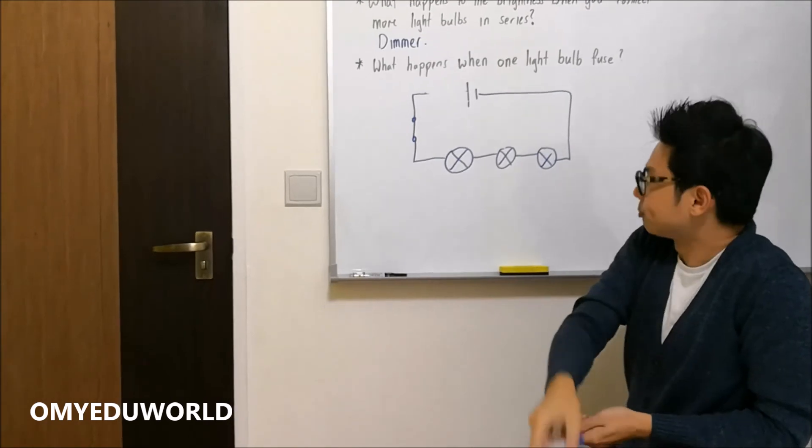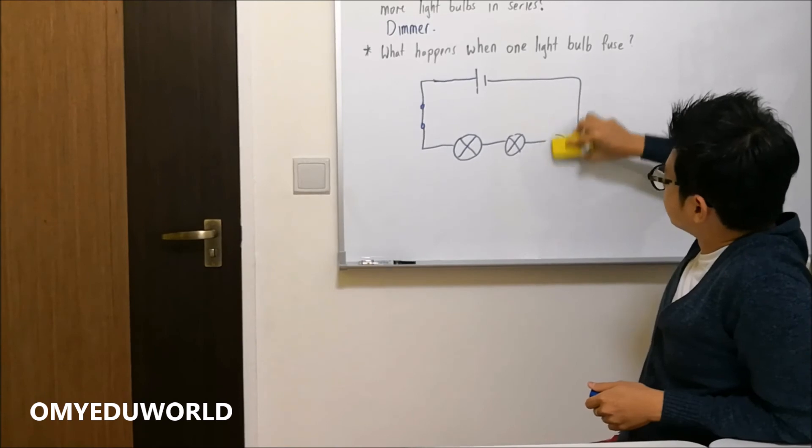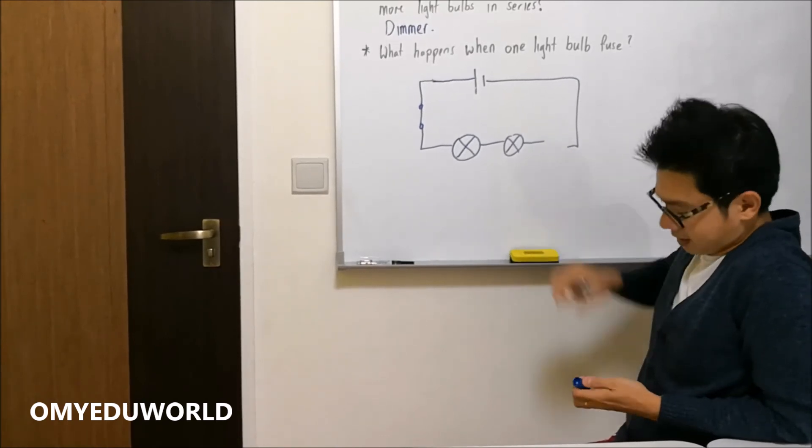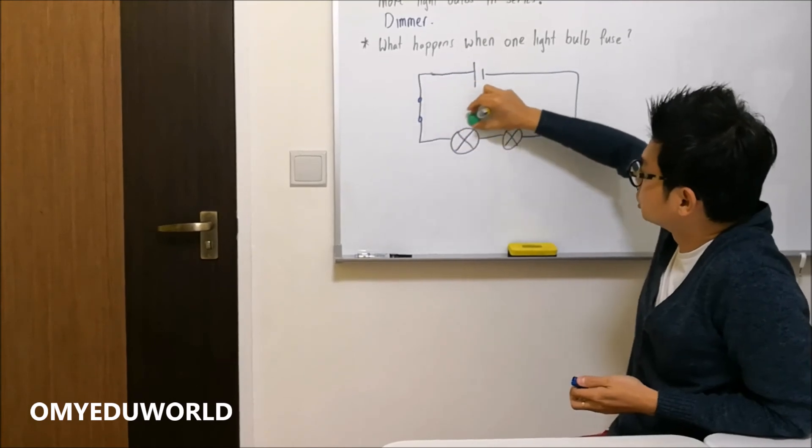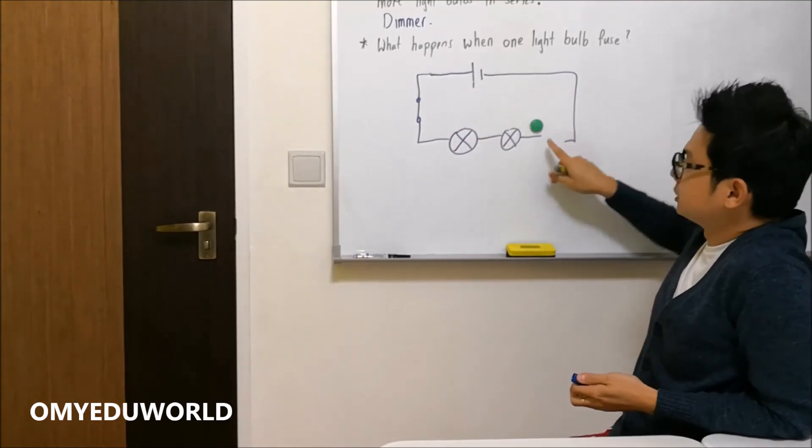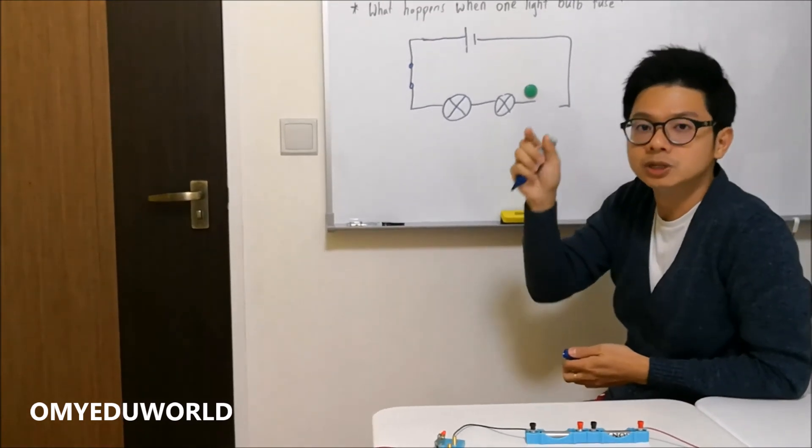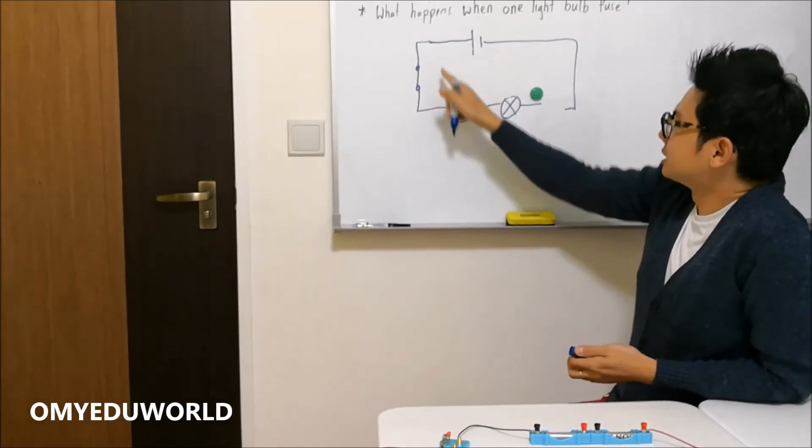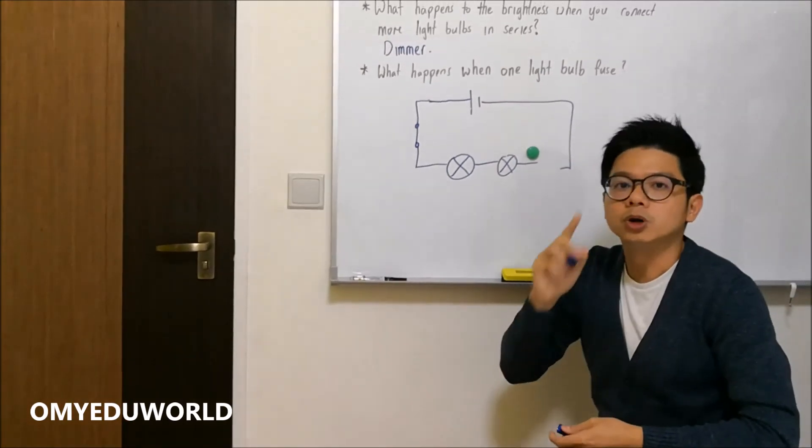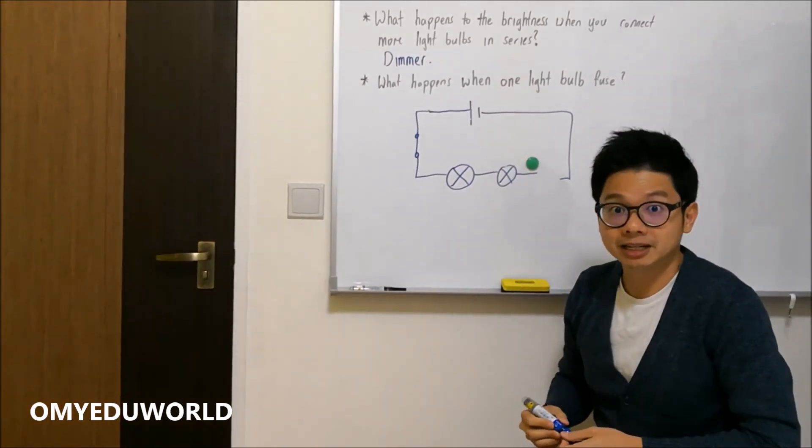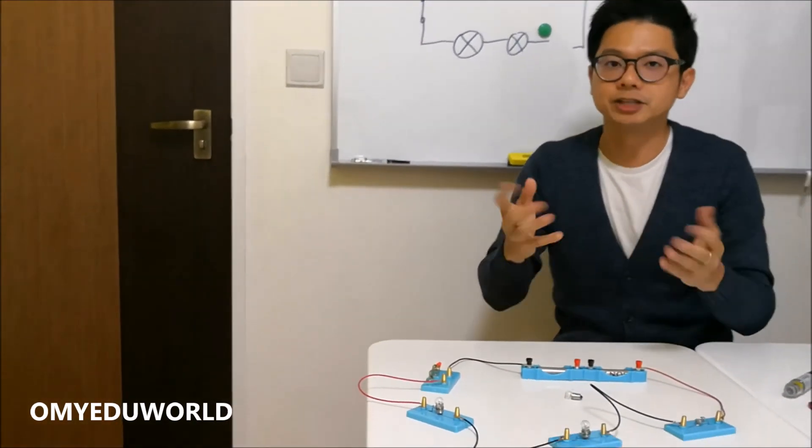So when one light bulb fails or when I remove one light bulb, imagine this is gone. And can the electricity still flow through the entire circuit? You can see you come here and then you reach this gap which is like a break point. So the circuit is open. Electricity cannot flow. That's why these two light bulbs also will not light up. This part clear? So basically this is what I have for you for this series circuit. Hope you enjoy it.